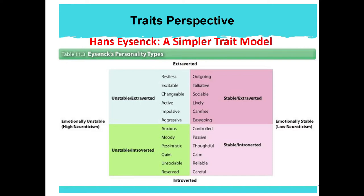If you are unstable and extroverted, you might be restless, excitable, changeable, active, impulsive, or aggressive. If you are stable and extroverted, you are outgoing, talkative, sociable, lively, carefree, and easygoing. If you are stable and introverted, you are controlled, passive, thoughtful, calm, reliable, and careful. If you are unstable and introverted, you might be anxious, moody, pessimistic, quiet, unsociable, or reserved.